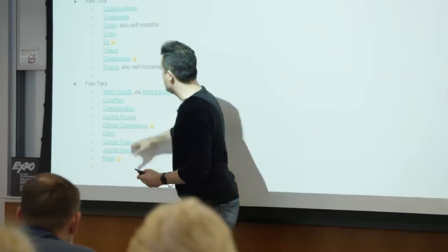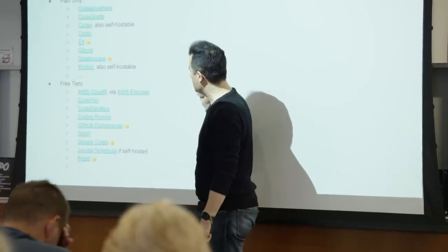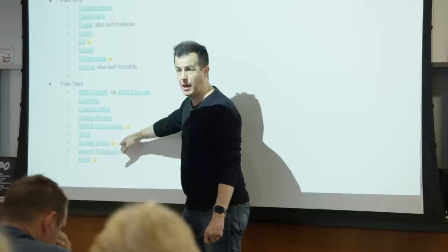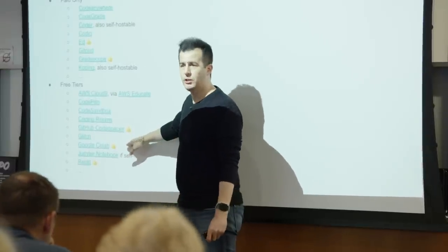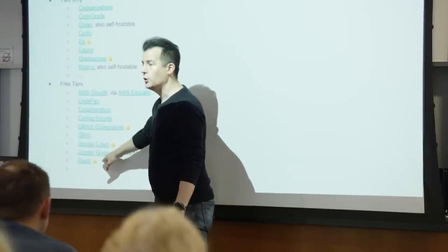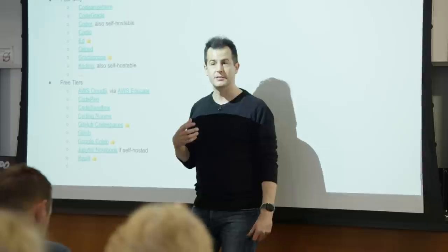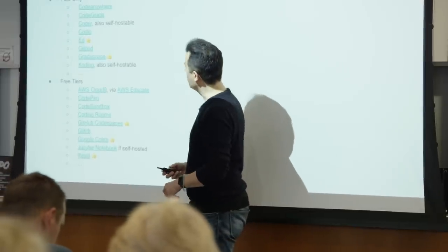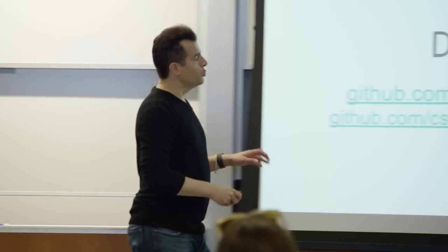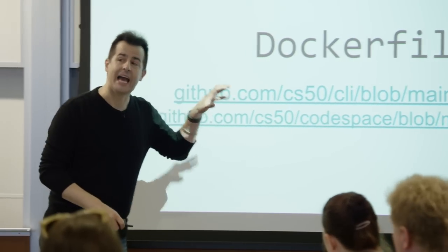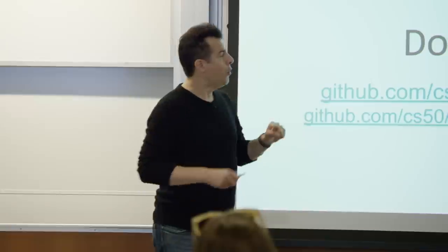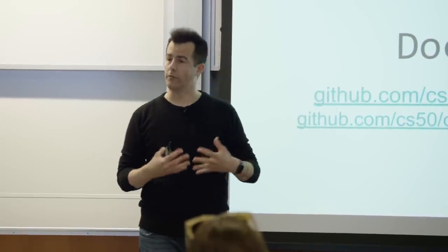There are a lot of free tiers as well, either through educational plans or available to anyone. We of course are using Codespaces. We've also experimented with Colab, which is a popular implementation of Jupyter Notebook, especially if you have Google Classroom at your school. Replit is a very popular option too, which gives you turnkey cloud-based programming environments. There are many more — feel free to discuss later today in one of our Birds of a Feather sessions. To give you a sense of what happens underneath the hood when you or students go to CS50.dev, there are a few configuration files making all the magic happen.